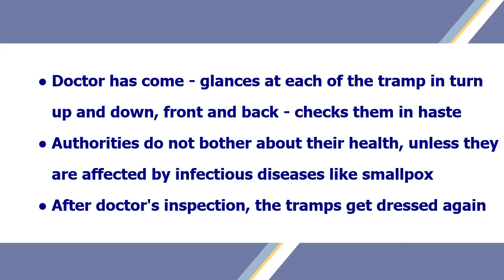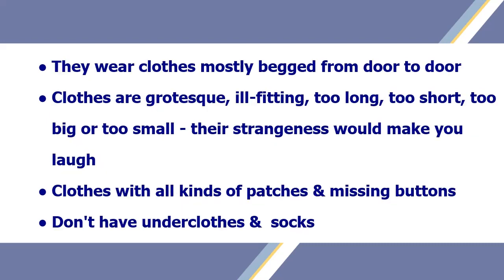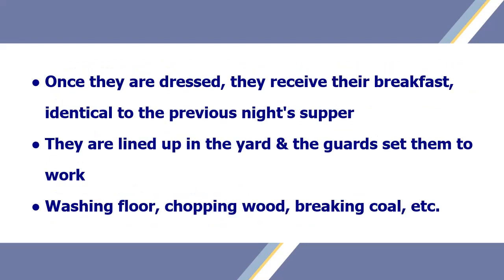After the doctor's inspection, the tramps get dressed again. They wear clothes mostly begged from door to door — grotesque, ill-fitting, too long or too short, too big or too small. Their clothes have been repaired with all kinds of patches and missing buttons. Some have no underclothes and many do not even have socks. Once dressed, they receive breakfast identical to the previous night's supper. Then they are lined up in the yard of the spike where the guards set them to work — some will wash the floor, others will chop wood, break coal and do a variety of jobs until 10 o'clock.